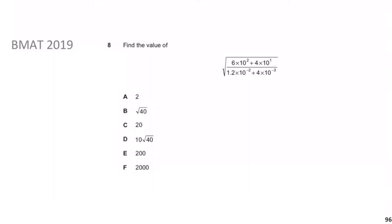Now we move on to the next question: BMAT 2019 question 8. This question says: find the value of that nasty-looking square root. Pause the video, give yourself a minute, and be sure to be back after that minute — we'll go through the solution.